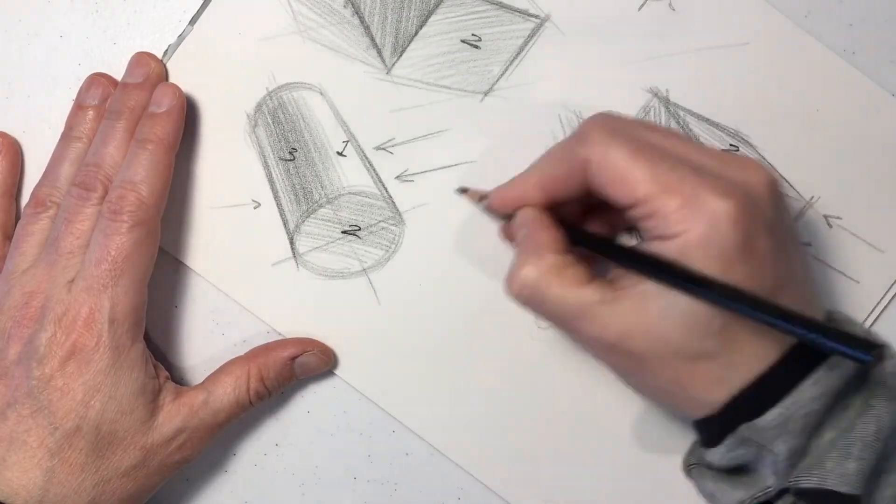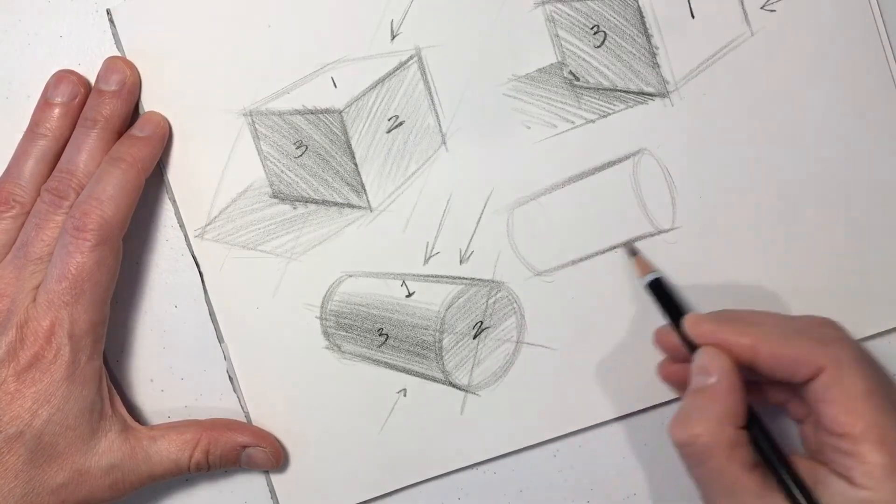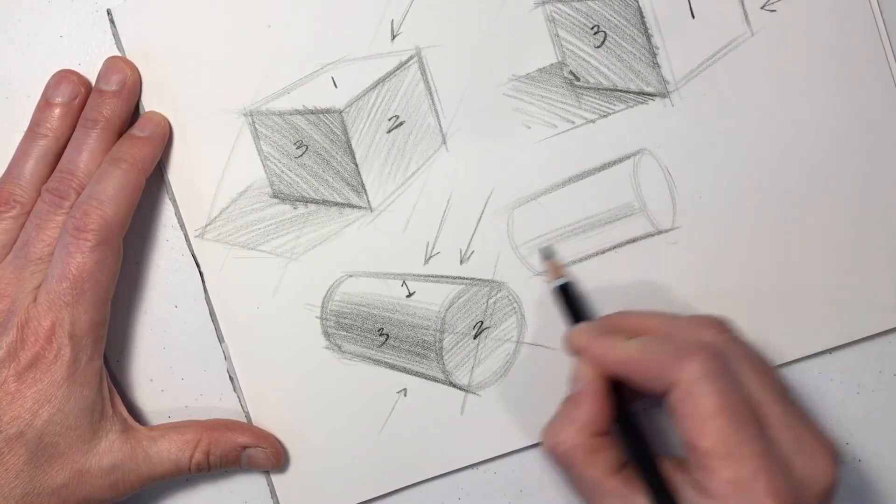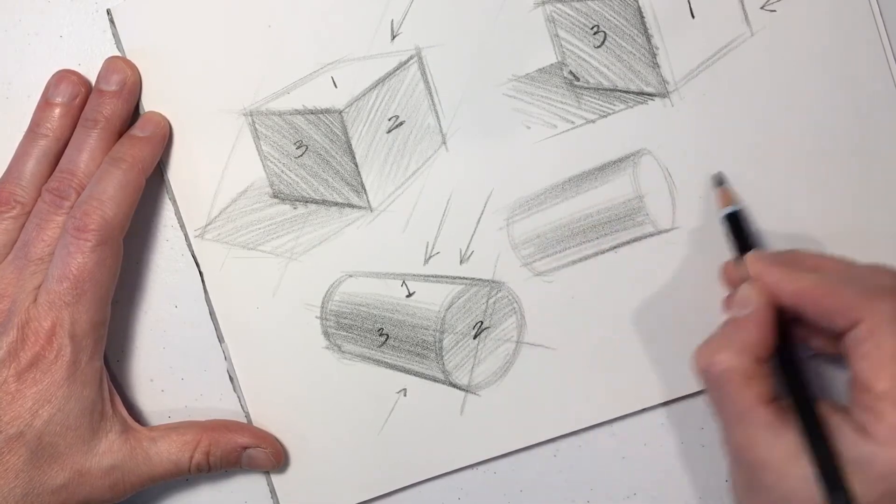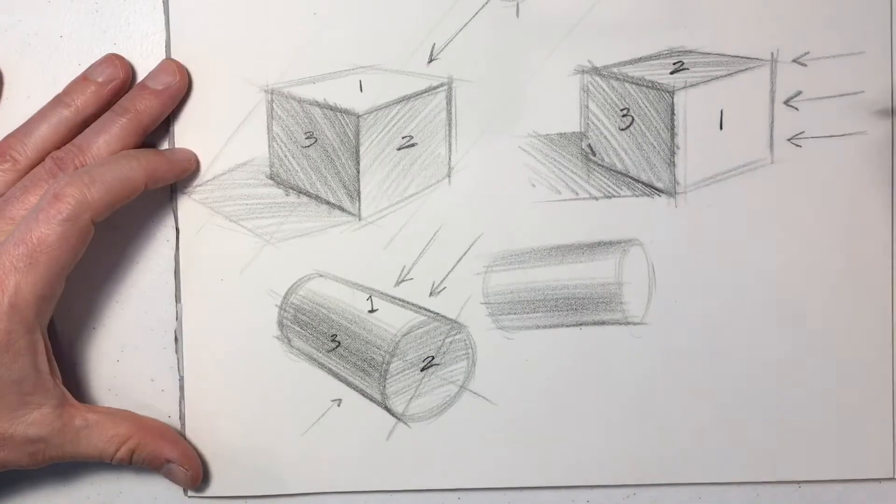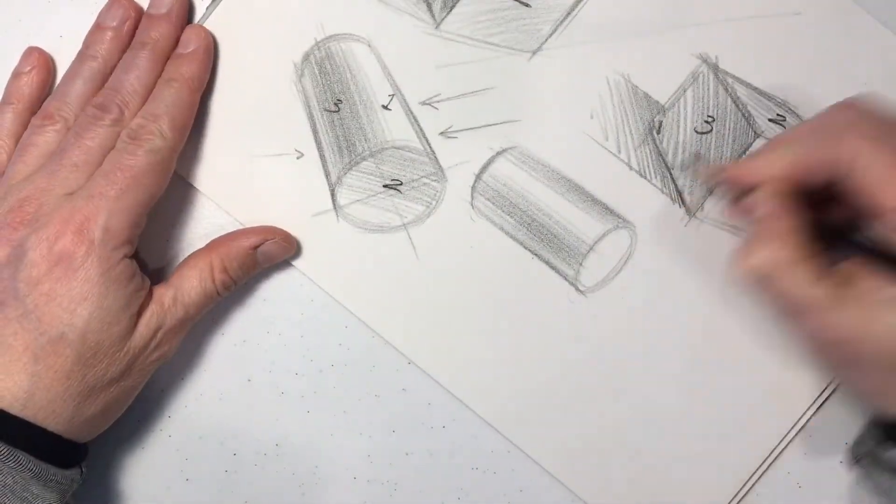Let's draw another cylinder with a slightly different light source. Let's say the light source is coming from behind the viewer, and it's lighting up the side of that cylinder. So you might get a shadow area towards the ground, as it points towards the ground.